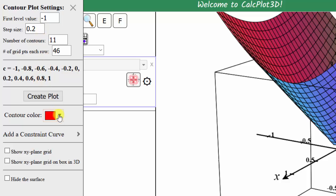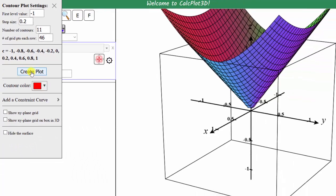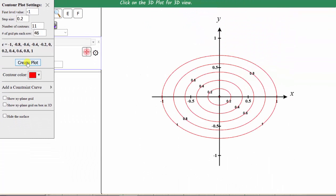We can also change the color of the contour plot by selecting a different color here. Let's click create plot. And now we have our contour plot. Notice how the values of c are on each level curve in black.